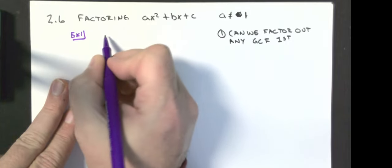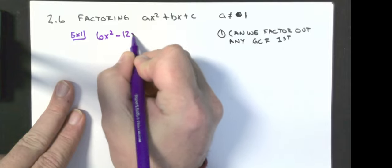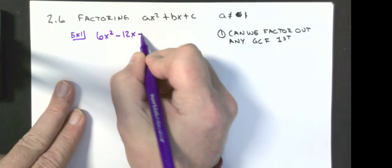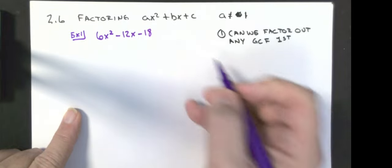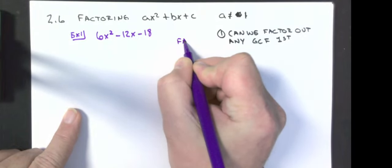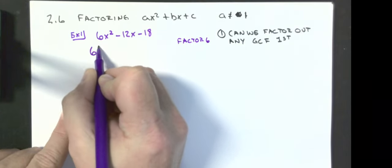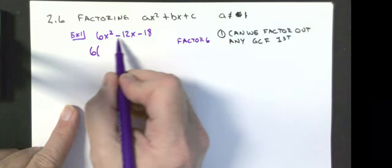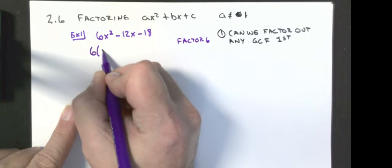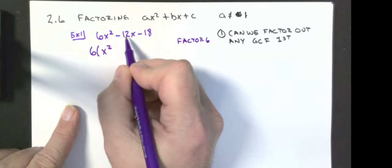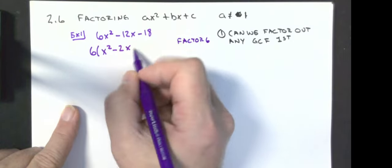So I'm going to have 6x squared minus 12x minus 18. There is a common factor in here, so I'm going to factor out a 6. That means 6 is going to go in front. I'm going to divide each term by 6: 6x squared divided by 6 is x squared, negative 12 divided by 6 is negative 2, and negative 18 divided by 6 is negative 3.